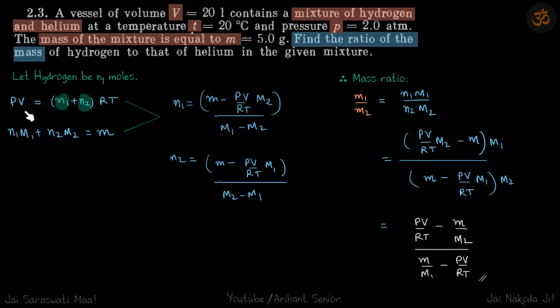For the mixture we can write the ideal gas equation: PV is equal to N1 plus N2 into RT.